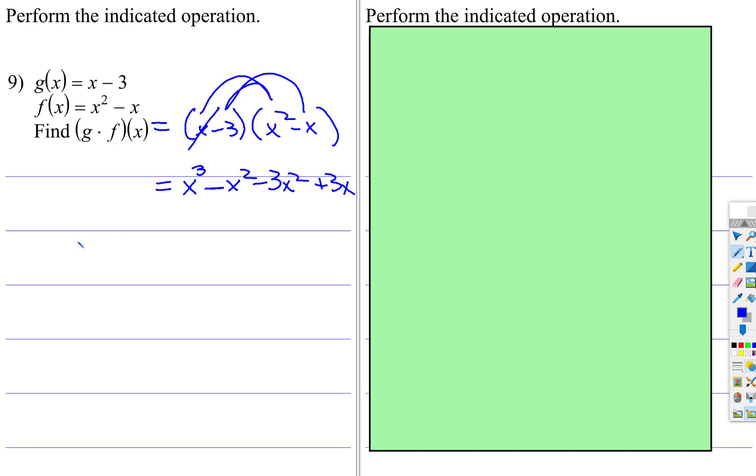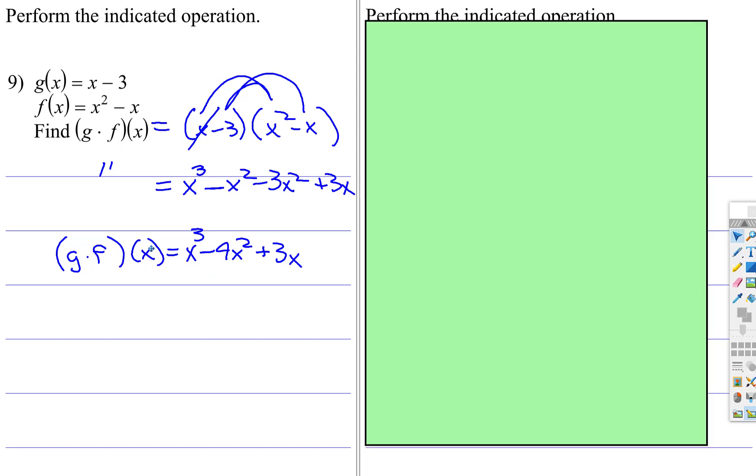And then you're going to simplify. I should be rewriting this each time. G times f of x is equal to x cubed, well negative x squared, subtract 3x squared, is negative 4x squared. And then you tack on the plus 3x. So this is the new function composed from the two given functions using multiplication.